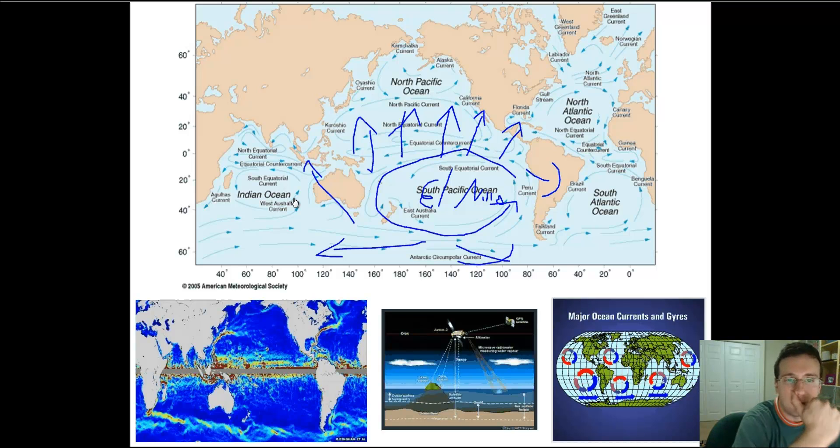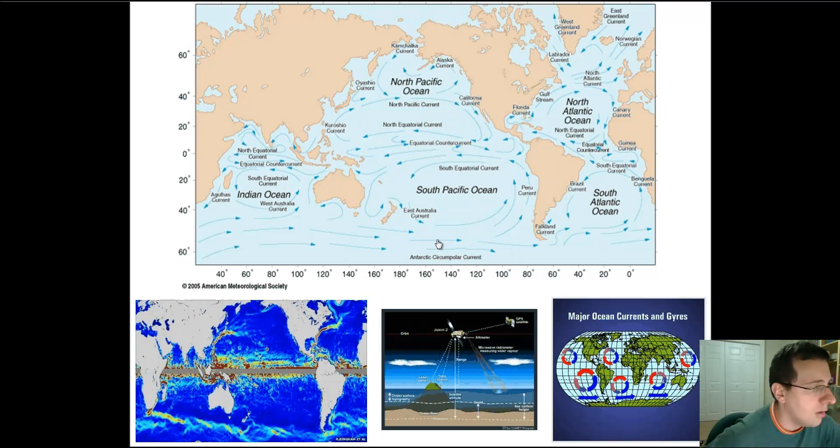And the opposite will happen during La Niña, when the solar minimum will cool down this current so much that it almost shuts it down, leading to droughts around the world. And also, as I mentioned in the beginning of this video, the Indian Current system is much more concentrated, allowing for greater evaporation and consequently severe monsoon patterns that don't show up in other oceans of the world.